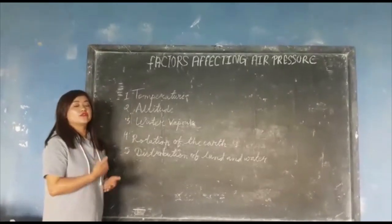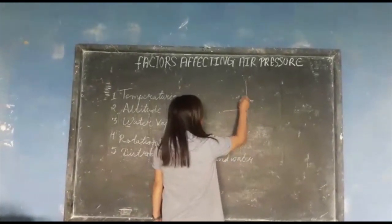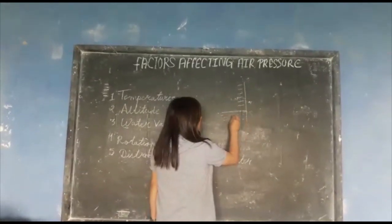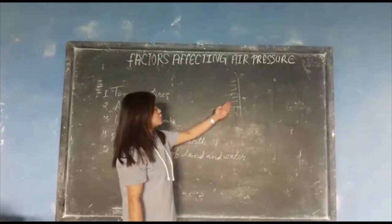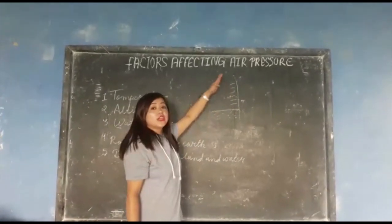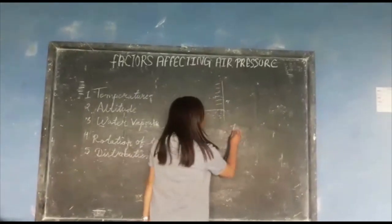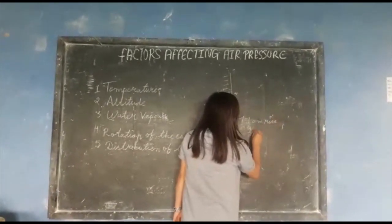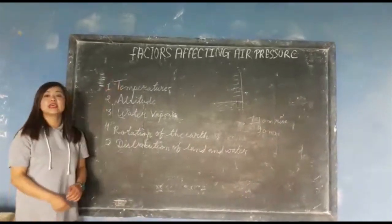Altitude means the height of the land. As the altitude or height increases, air pressure decreases. At sea level, there is dense air and consequently high pressure. As altitude increases, air becomes thinner and thinner, therefore there would be low air pressure. For about every 110 meters of rising altitude, air pressure decreases by 10 mm. This is how altitude affects air pressure.